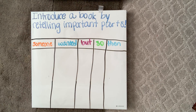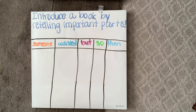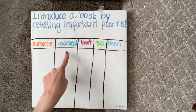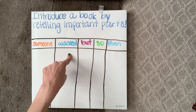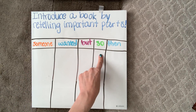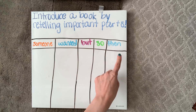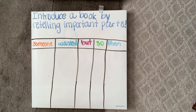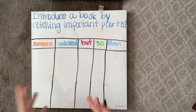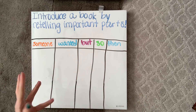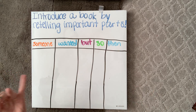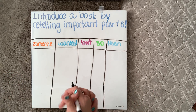Okay, so there are some things that we're going to do to introduce this book by retelling the important parts. The key words we're going to look at are: someone, wanted, but, so, and then. This is going to really help us connect up those important parts and make them flow into one solid idea to introduce our book.